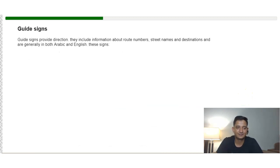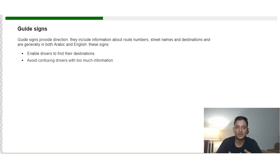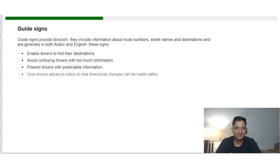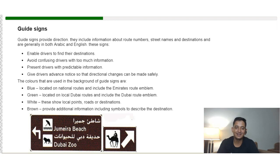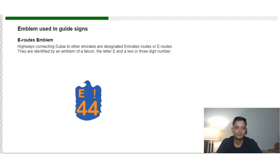Guide signs provide direction to road users. They usually include information about route numbers, street names, and destinations, and are generally displayed in both Arabic and English. They enable drivers to find their destination without confusion. The curl emblem is located on national routes, the green emblem is on local Dubai routes, white background signs show local points or destinations, and brown signs provide additional information including symbols describing the destination.